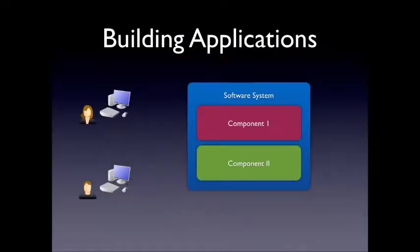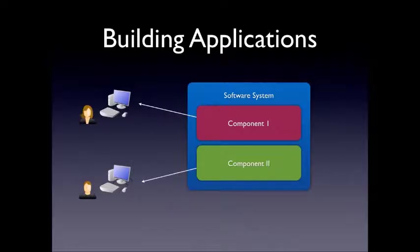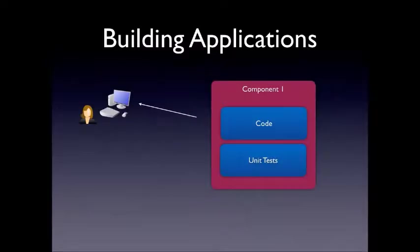So what exactly does this mean? Well, let's take a look at a typical scenario when we're building applications. Often we're faced with a software system composed of different components. We have one person working on component 1 and another person working on component 2. Each of these people, in isolation, have the code and the unit tests, and everything normally works out great.